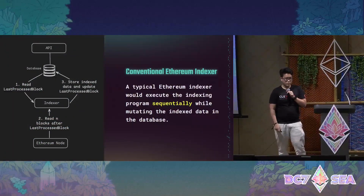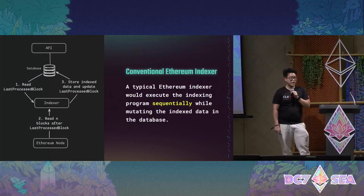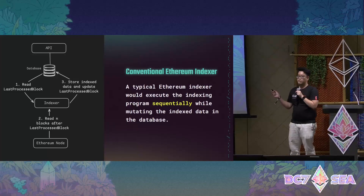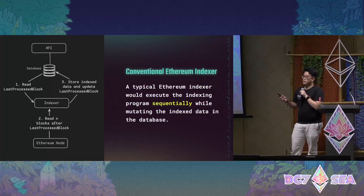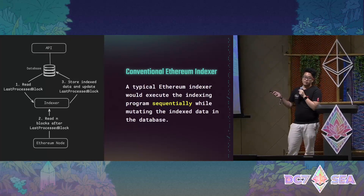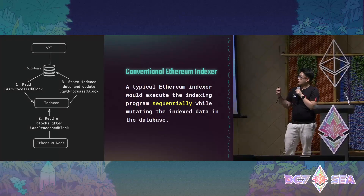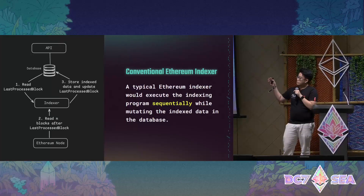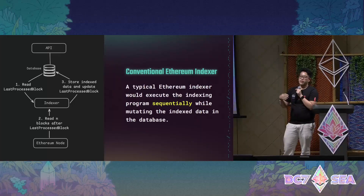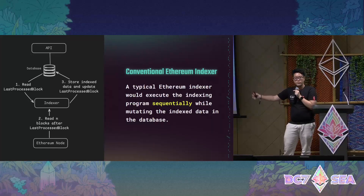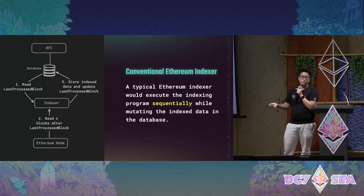When talking about indexing on blockchain, this is the conventional way to do it. You have a database that tracks the latest block that you have processed, and then you call the blockchain node, get the data, update that block, and so on. You loop this until you get the latest block. This is the conventional way to work on a blockchain indexer.